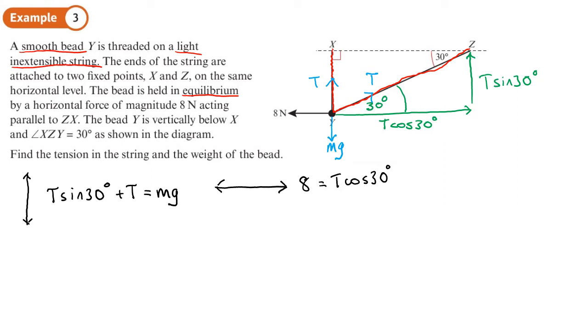Now from this equation, we can work out what T is because T will just be 8 divided by cos 30. So if we need a rounded value for that, let's just work that out, 8 divided by cos 30. And we get 16 root 3 over 3, which is 9.237. So let's call that 9.24. So 9.24, that's three significant figures as usual, newtons.